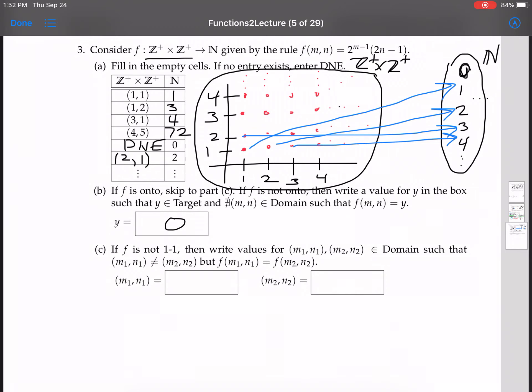Okay, now we're going to do part C. So we have to decide if F is one-to-one or not. If F is one-to-one, then we don't have to do anything and we're done. If F is not one-to-one, we've got to provide a counterexample.